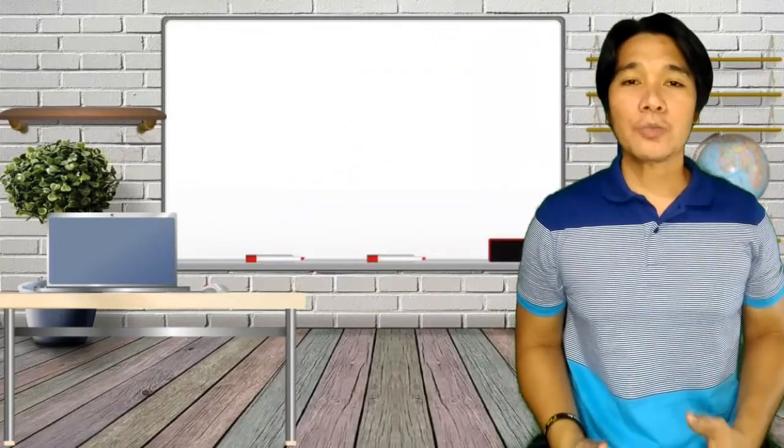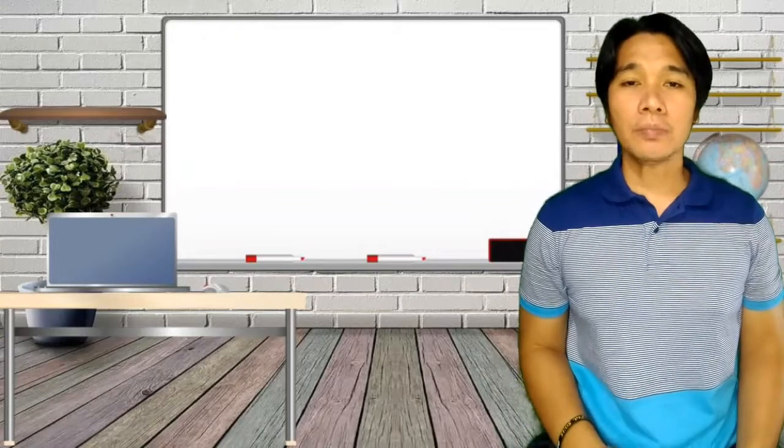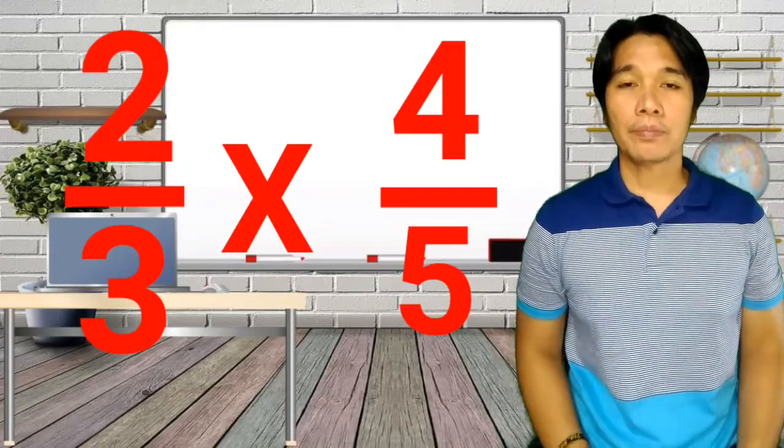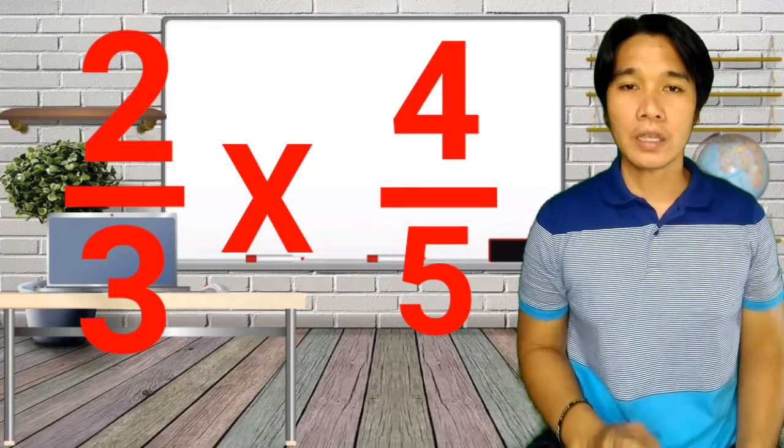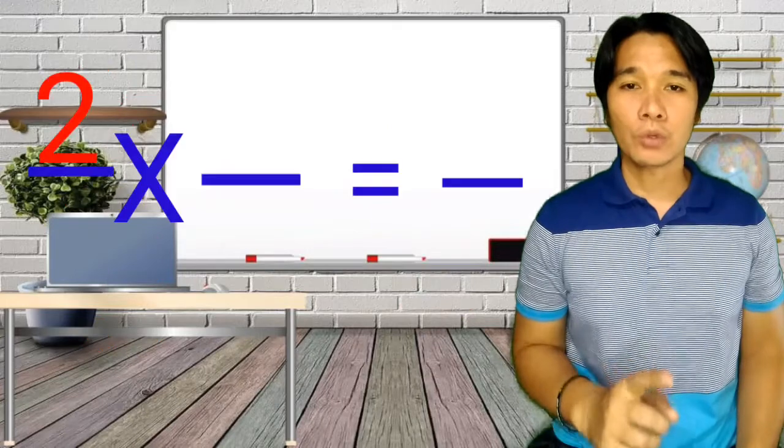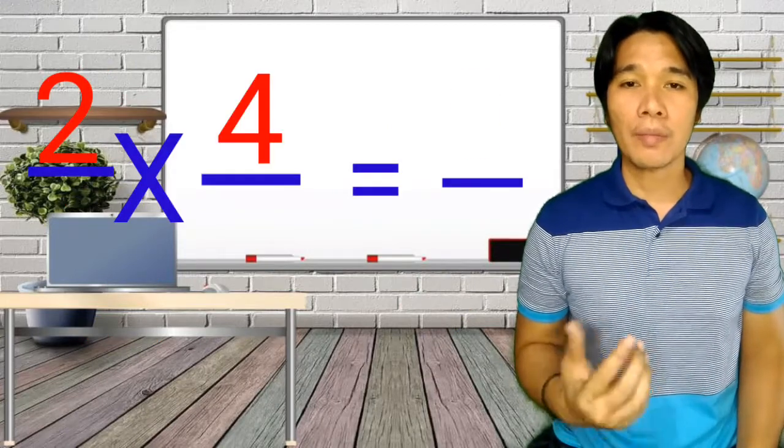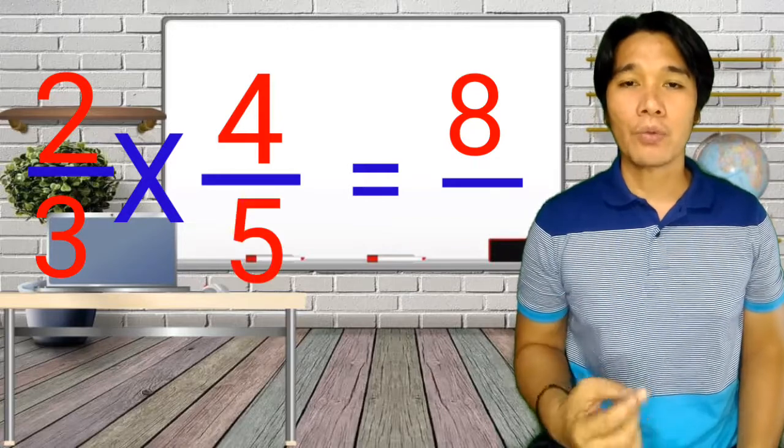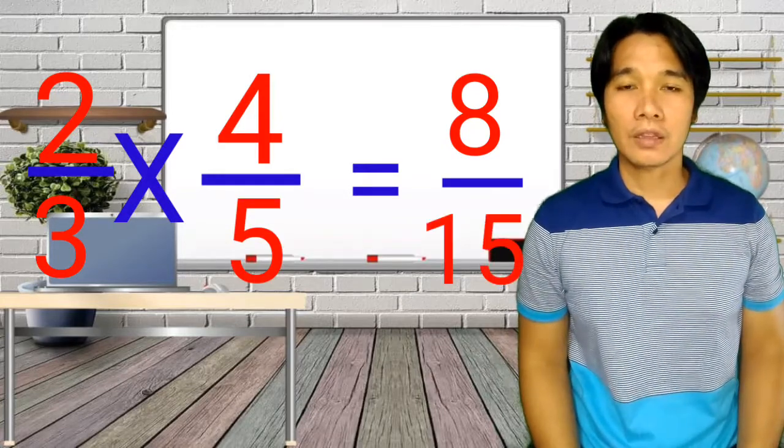Now, let's try this problem. Let us multiply 2 third times 4 fifth. So, the first step is let us multiply the numerator. So we have 2 times 4, we have 8. And then, 3 times 5, we have 15.